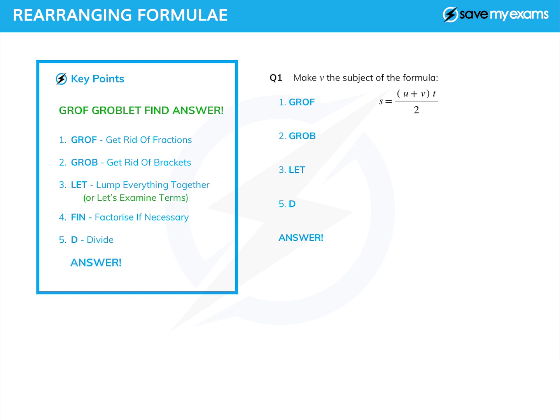We could do some really simple ones with this, but we're going to go straight in with some slightly more complicated ones. So let's have a look at this first one. I've got to make V the subject of this expression here — in other words, I need to end up with V equals. Let's just follow the rules: Groff Groblet Find Answer. The first thing we need to do is Groff, which is to get rid of fractions.